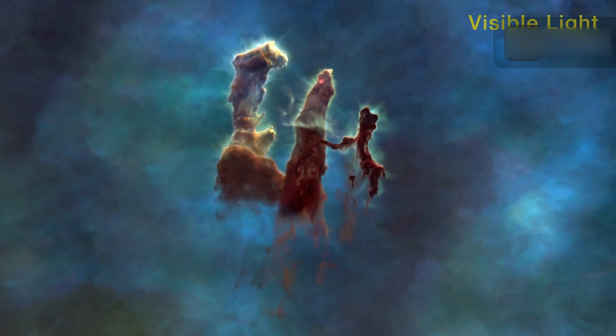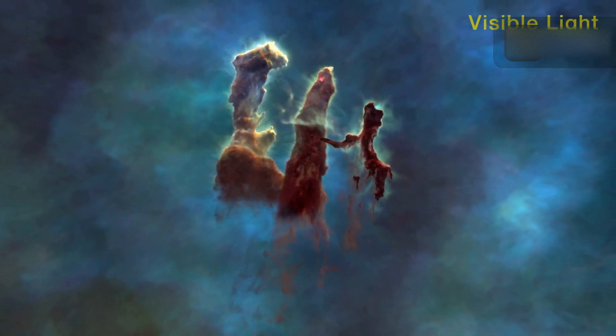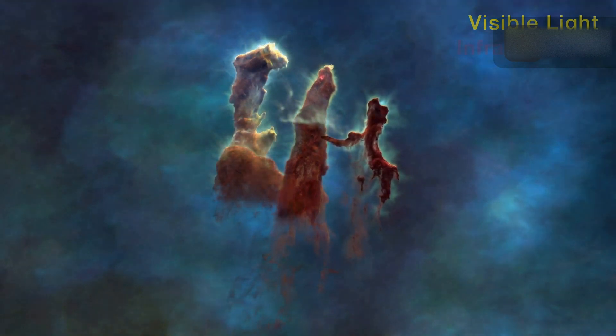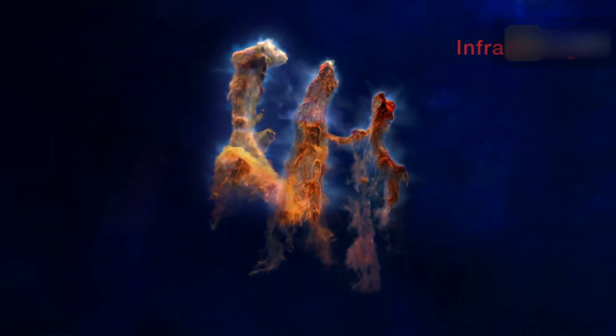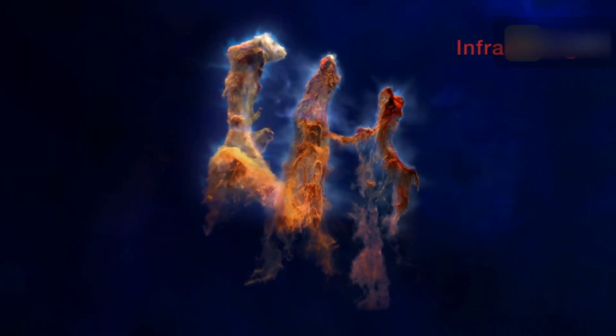Cool molecular hydrogen and dust make up the four Pillars of Creation. The intense winds and harsh ultraviolet radiation from the neighboring hot, young stars are eroding them.